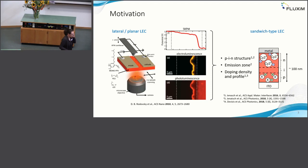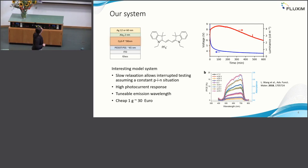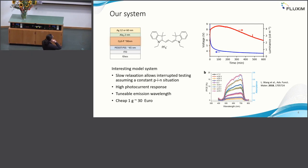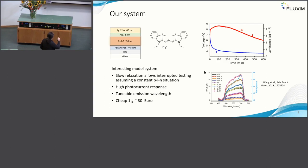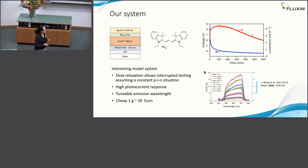A few words to our system. We use cyanine dyes. They typically look like this. They are not as high performing as super yellow, but this was not the main interest of this project. They have several other benefits important for the study. For example, they have a slow relaxation, so we can turn the LEC off, switch it off, and the relaxation is so slow that we have a kind of steady state situation of ionic charge carriers, and we can probe them with certain experiments.